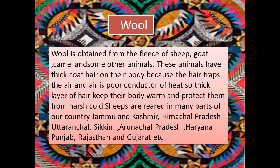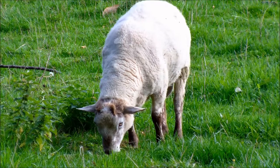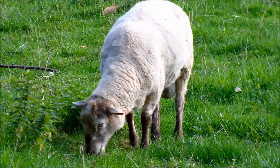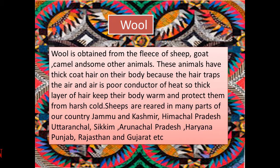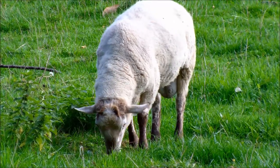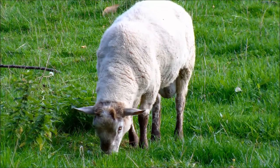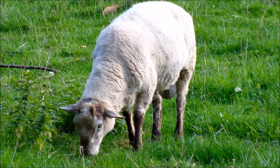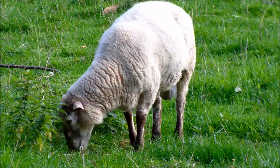In cold weather we prefer wool in clothing. Wool is obtained from the fleece of sheep, goat, camel, and some other animals. These animals have a thick coat of hair on their body which traps air. Since air is a poor conductor of heat, the thick layer of hair keeps their body warm and protects them from harsh cold. Sheep are reared in many parts of the country like Jammu and Kashmir, Himachal Pradesh, Uttaranchal, Sikkim, Arunachal Pradesh, Haryana, Punjab, Rajasthan, and Gujarat.